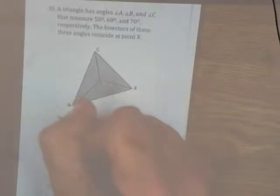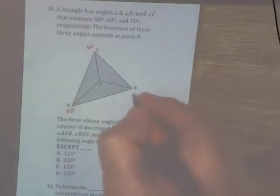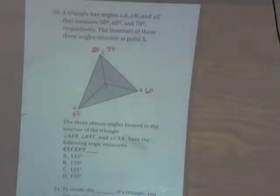Alright, last one, 30. The triangle has angles A, B, and C that measure 50, 60, and 70 respectively. So A is 50, C is 60 degrees, and whoops, 60 degrees here, and C is 70 degrees. The bisectors of the three angles coincide at point X. So the angle bisectors, incenter, X would be the incenter.